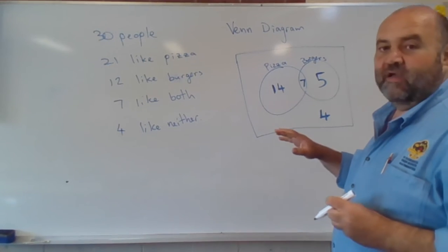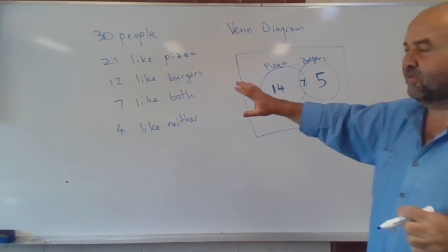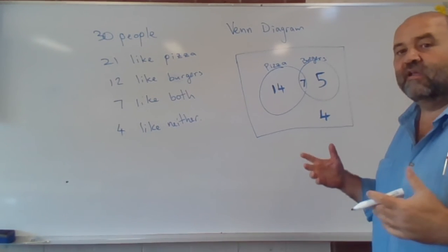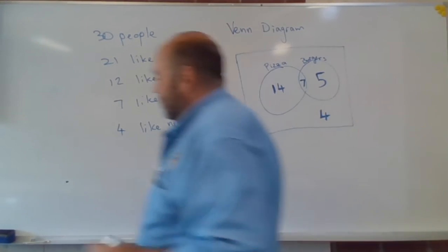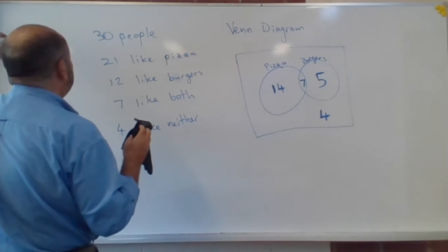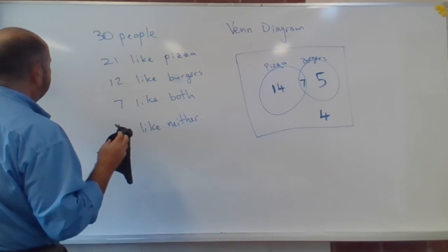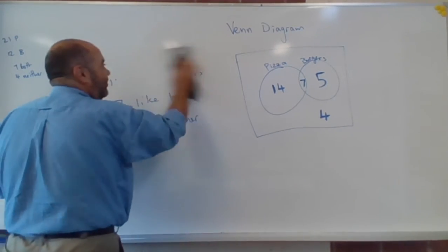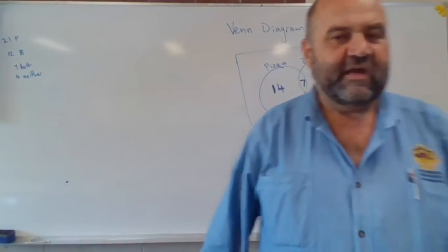Now, I'm just going to rub off this side of the board, so you can see how those go together. I'm going to rub this side of the board off and we're going to represent this data, the same data again, but this time in a two-way table. So two different ways representing the same kind of data. So this is my 21 pizza likers, 12 burger likers, 7 both, and 4 neither.